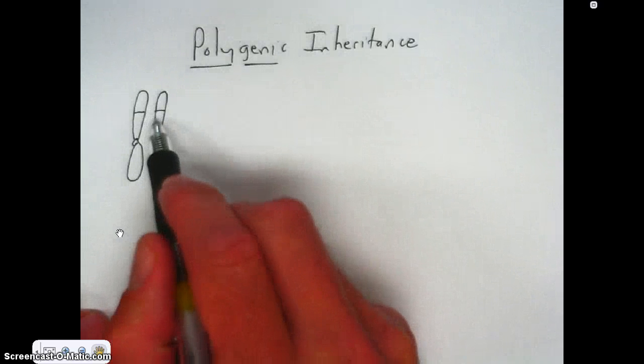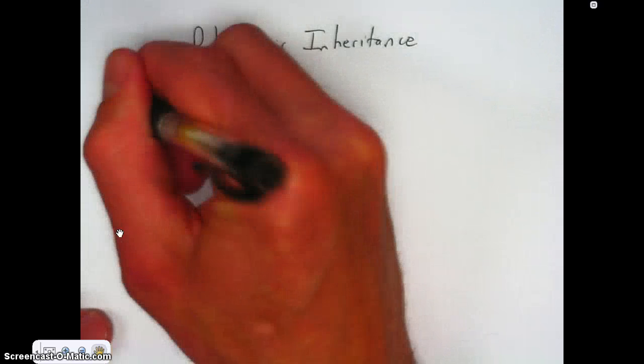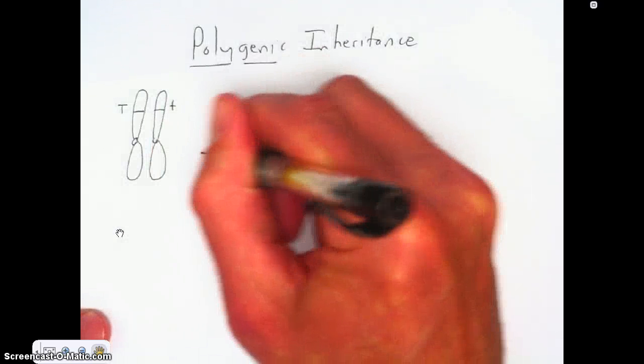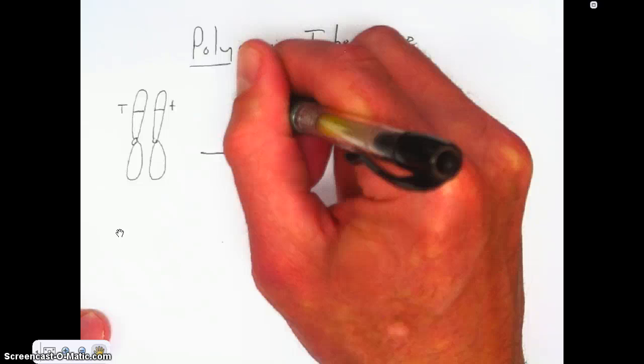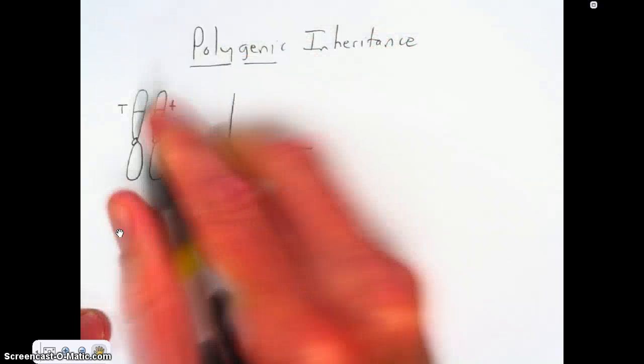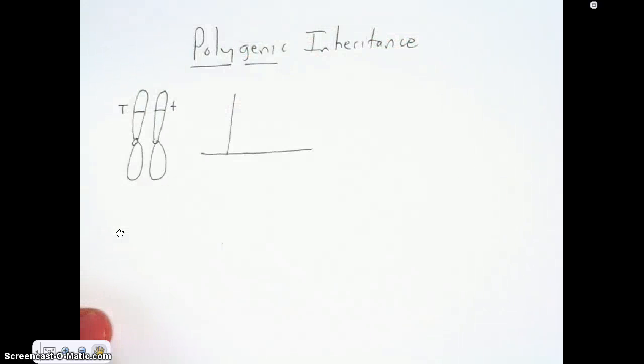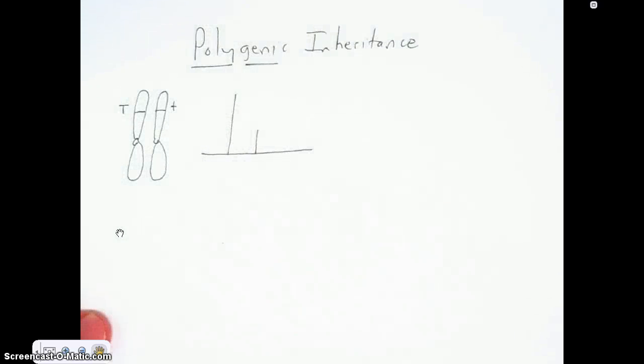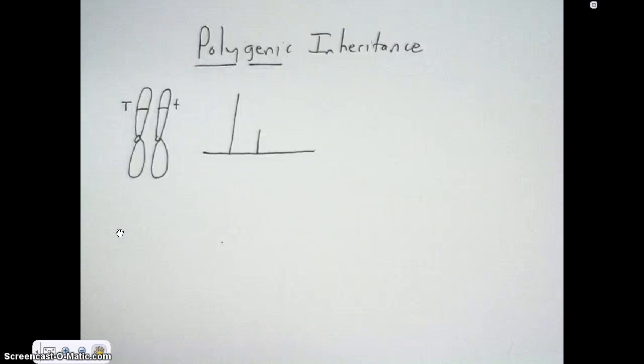At that particular gene location, you had the options of having the alleles big T or little t. So if you were to see this particular plant, this plant would be a tall plant because it has the dominant tall allele. A short plant would be very noticeable because it would be much smaller than what the tall plant is.